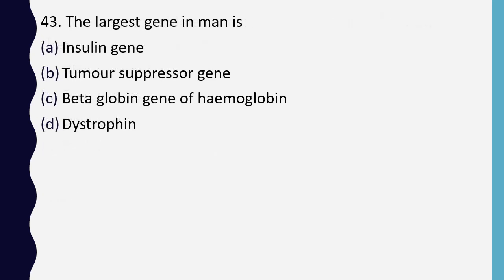Question 43. The largest gene in man is: insulin gene, tumor suppressor gene, beta globin gene of hemoglobin, or dystrophin gene. The correct answer is option D: dystrophin gene.